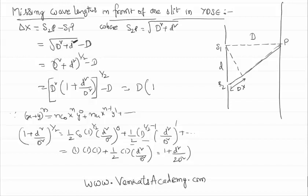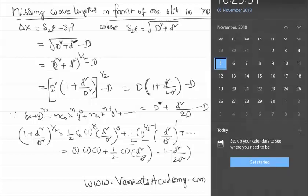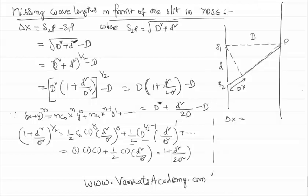We can write capital D times 1 plus d squared by 2 capital D squared, minus d. This gives us capital D plus d squared by 2 capital D minus d. The d terms cancel and the remaining value is: Delta X equals d squared by 2 capital D. So we have found the path difference Delta X equals d squared divided by 2D.